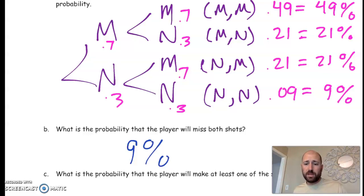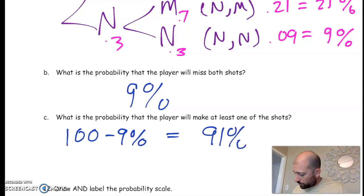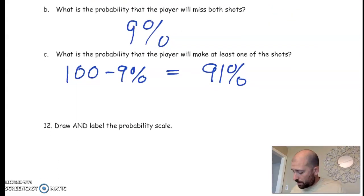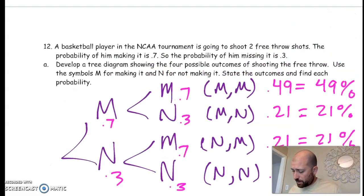Well, making at least one is the opposite of missing both, so that is a 91 percent chance. The part about drawing and labeling the probability scale - we did that one already.